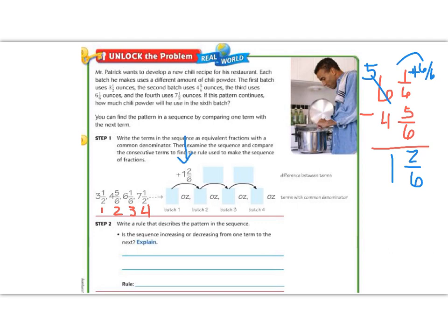And they actually showed us that there, but I wanted to show you how we got it. So if we look at 3 1/2, and then we add 1 2/6, then we get 4 5/6.